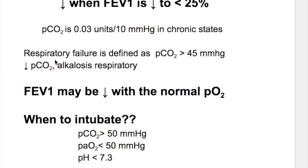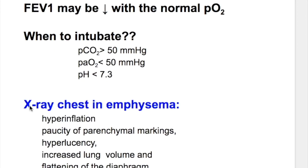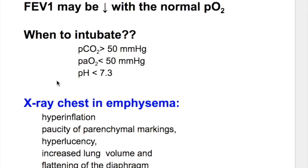Respiratory failure is defined as carbon dioxide more than 45 mmHg. FEV1 may be decreased with a normal oxygen level. Indications for intubation: when carbon dioxide is more than 50 mmHg, oxygen is less than 50 mmHg, and pH is less than 7.3.